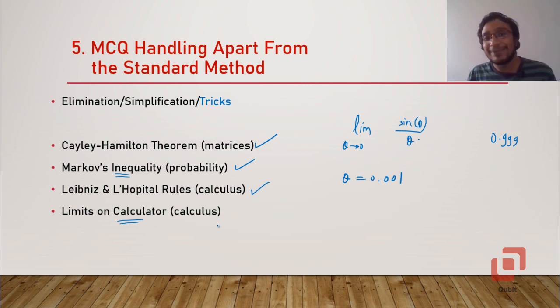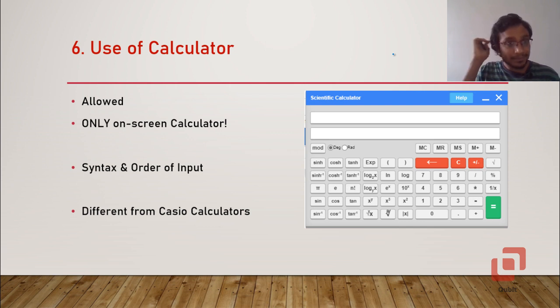So you can find some limits on calculator. Of course the paper setters are wiser than me so they will of course take care of this particular loophole that the calculator is providing but nonetheless if you're smart enough then of course you'll get to know more about that. And the use of the calculator is not only restricted to just finding limits, you can also establish certain inequalities like you can decide which one is greater, is it e raised to pi or pi raised to e. You can also decide that on calculator.